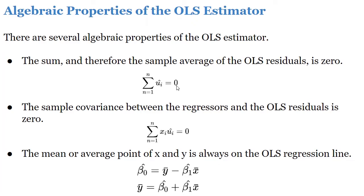The second property of the OLS estimator is that the sample covariance between the regressors and the OLS residual is always going to be zero. We can write that as: summation of x_i multiplied by û_i equals zero.